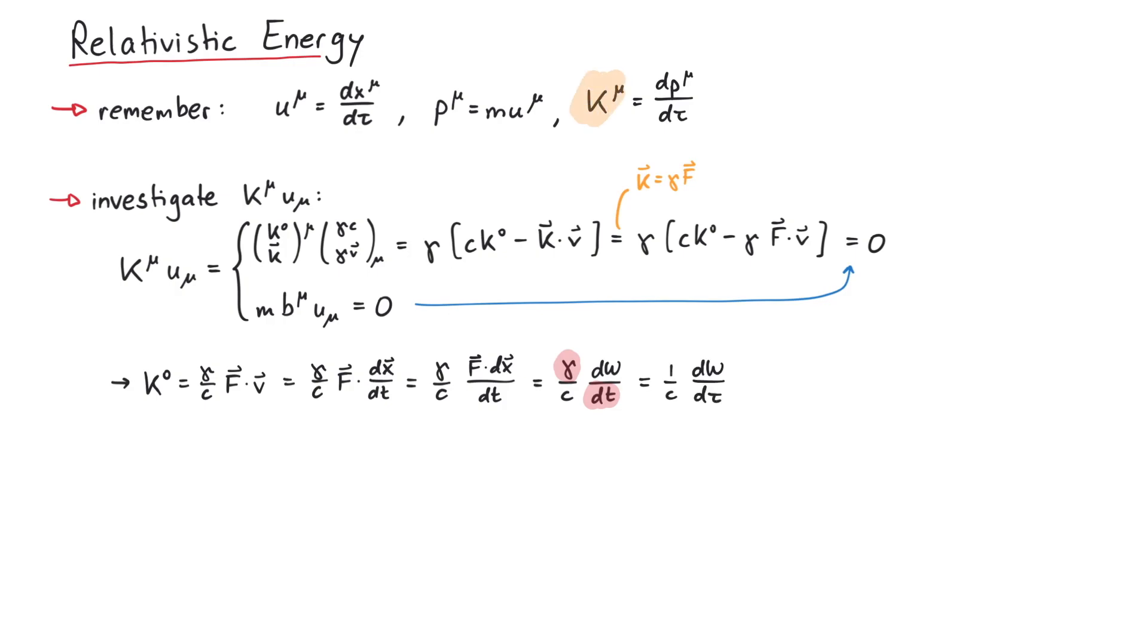Since the 4-force k mu is defined as the derivative of 4-momentum with respect to tau, we now have two expressions for k0. As they must be the same, we can express w as cp0, so that we can interpret the zero component of 4-momentum as an energy. The physical interpretation is as follows: If you take a particle at rest, apply a force and thereby accelerate it, the quantity cp0 changes by the amount of work that was performed by applying the force.